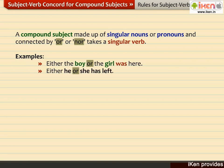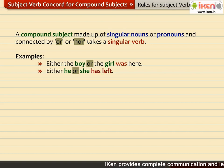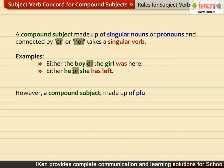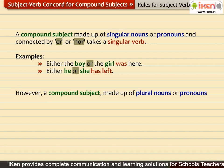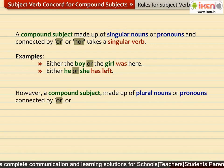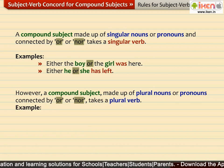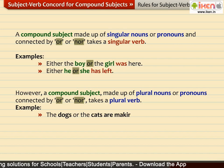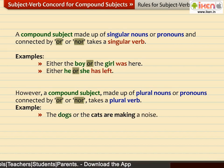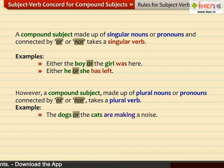The singular pronouns HE and SHE will take the singular verb HAS LEFT. However, a compound subject made up of plural nouns or pronouns and connected by OR or NOR takes a plural verb. For example: 'The dogs or the cats are making a noise.' The plural nouns DOGS and CATS connected by OR take the plural verb ARE MAKING.